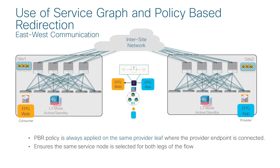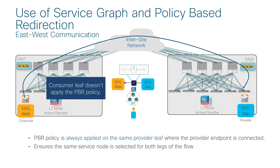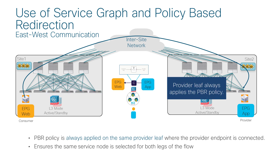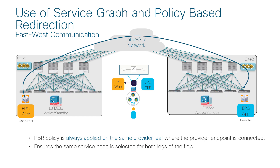For east-west contracts, policy is applied on the provider leaf for both incoming and return traffic to keep traffic symmetric. In this example, web EPG is the consumer and app EPG is the provider. Traffic from web to app is not enforced on the consumer leaf but on the provider leaf for both directions. The provider leaf uses the local PBR destination so that traffic is inspected by the same firewall and there is no traffic hair-pinning across sites.